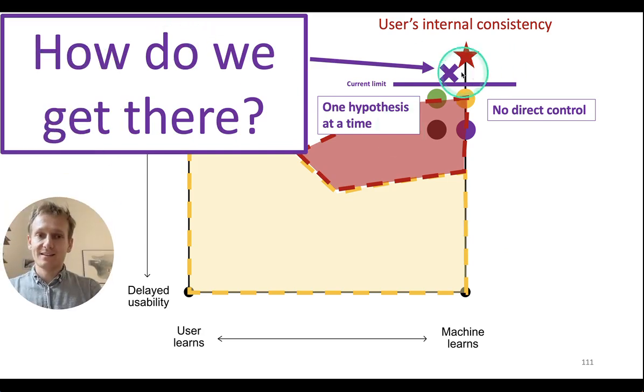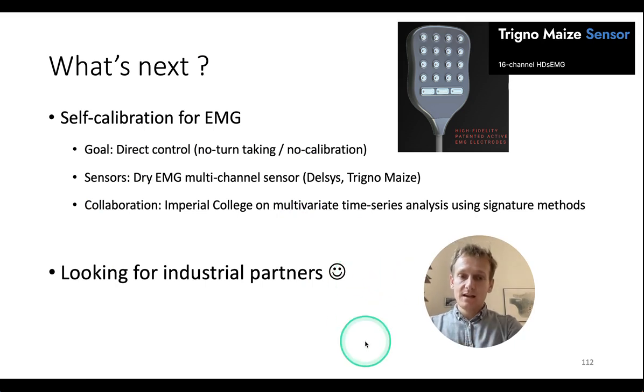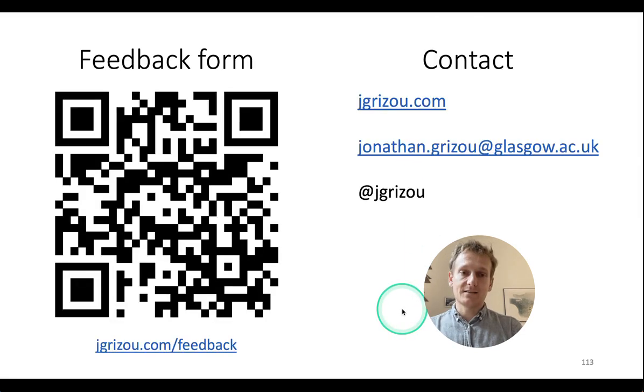To conclude, I want to say that what's next for me is that I'm trying to work on EMG signals on this nice sensor with dry electrodes. I'm trying to use that to do a direct control task, and I have some partnerships already in place with Imperial College on innovative mathematical methods to analyze those data that might make it easier for the downstream self-calibration task. If you're in the room and are interested in this as an industrial partner or an academic partner, please do reach out. My contacts are here. If you want to feedback on this talk, there's also a feedback form or get in touch. Thank you.